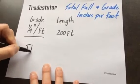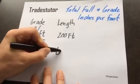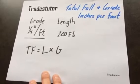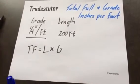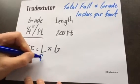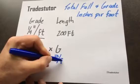Now this is a very specific example. It's in reference to total fall and grade. Our length is in feet, our grade is in inches per foot, and the answer, total fall, is going to be in inches.